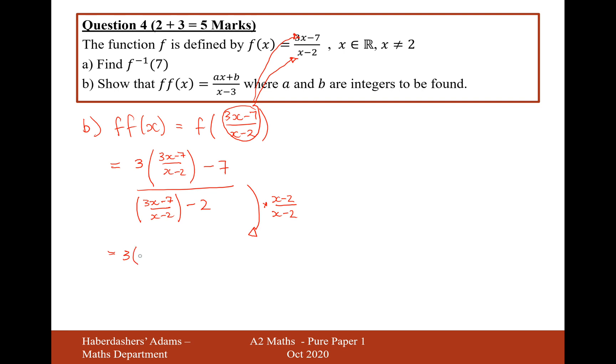So it's going to be 3 brackets 3x minus 7. It will get rid of the x minus 2, but then there now will be an x minus 2 on the 7 over 3x minus 7. That will cancel it out here, but now we're going to have an x minus 2 on the denominator where the 2 is.